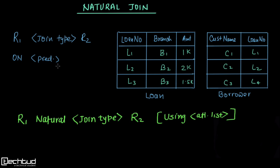For example, if in these tables we have loan number as a common attribute, when the attribute name is the same in both tables — such as loan number and loan number — we can specify the natural keyword. When we specify natural, it will automatically perform the join on the basis of the attributes which are common. This is how we specify the method of performing the join using natural join.